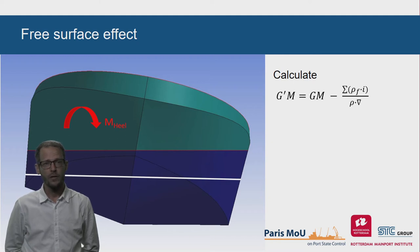We can calculate rho-fluid times I over 12. Divided by the displacement, this results in a reduction of GM in meters.